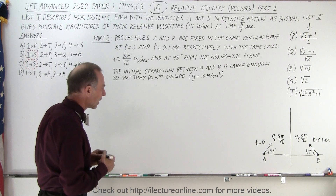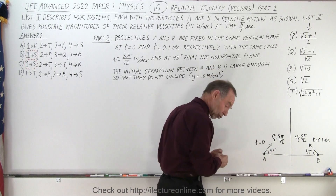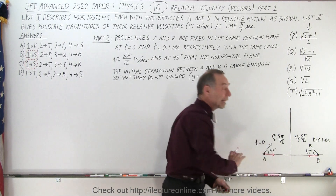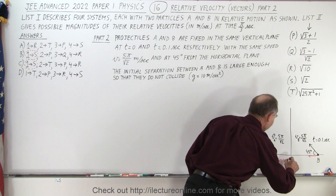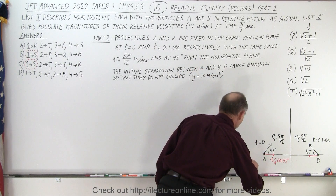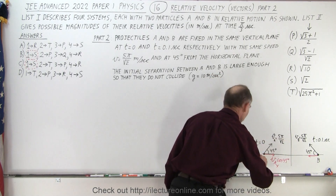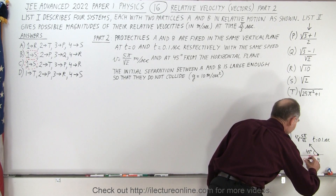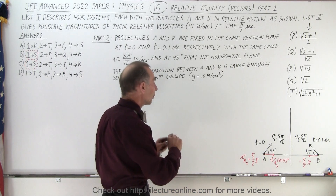It's a bit challenging. The velocity in the x direction is constant. The velocity in the x direction is the initial velocity times cosine of 45 degrees, and cosine of 45 degrees is the square root of 2 over 2. So VA in the x direction equals 5π over 2, and VB in the x direction is minus 5π over 2 since B is fired in the negative direction. These remain constant for both projectiles.